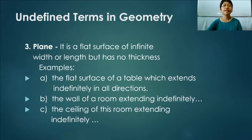The third undefined term is a plane. It is a flat surface of infinite width or length, but it has no thickness. Examples are the flat surface of a table, which extends indefinitely in all directions. The walls of a room extending indefinitely in all directions. And the ceiling of this room extending indefinitely in both directions.